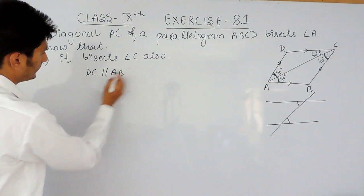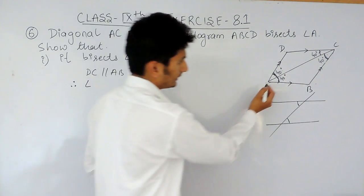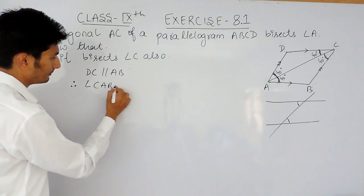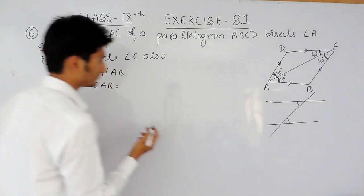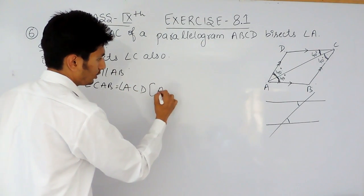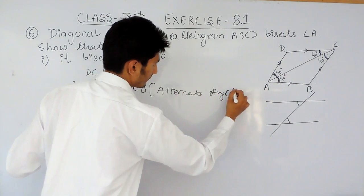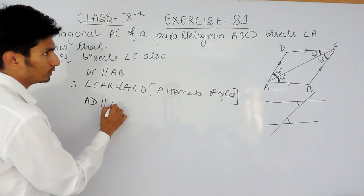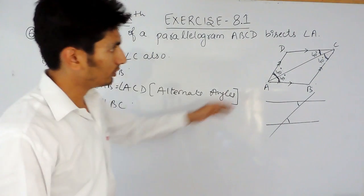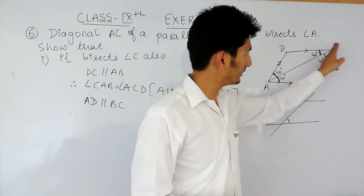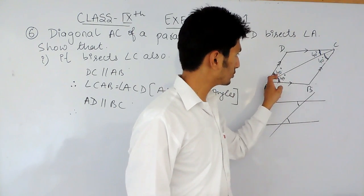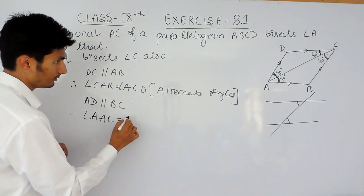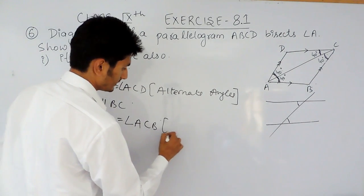DC is parallel to AB. Therefore, angle CAB must be equal to angle ACD — these are alternate angles. Similarly, AD is parallel to BC. Therefore, since this line is parallel to this line and AC is the transversal, angle DAC will be equal to angle ACB. This is again an alternate angle.